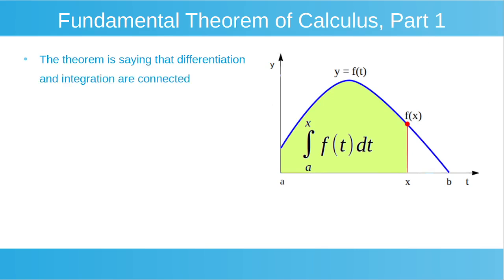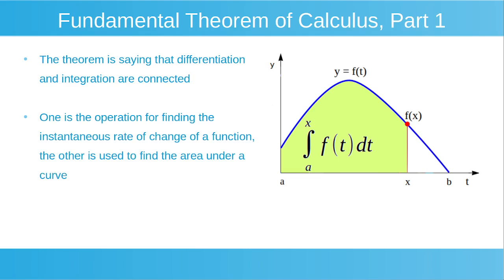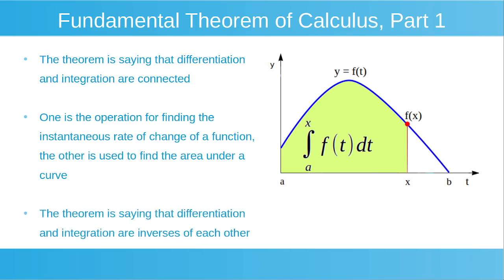The theorem is saying that differentiation and integration are connected. Differentiation is the operation for finding the instantaneous rate of change of a function, and integration can be used to find the area under a curve. While these processes may not immediately appear to be directly linked, our theorem is saying that they are, in actual fact, connected. The theorem is saying that differentiation and integration are inverses of each other.